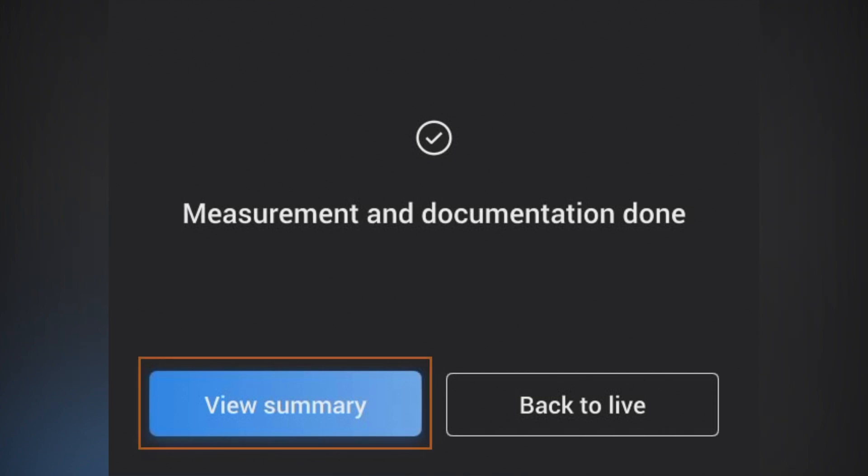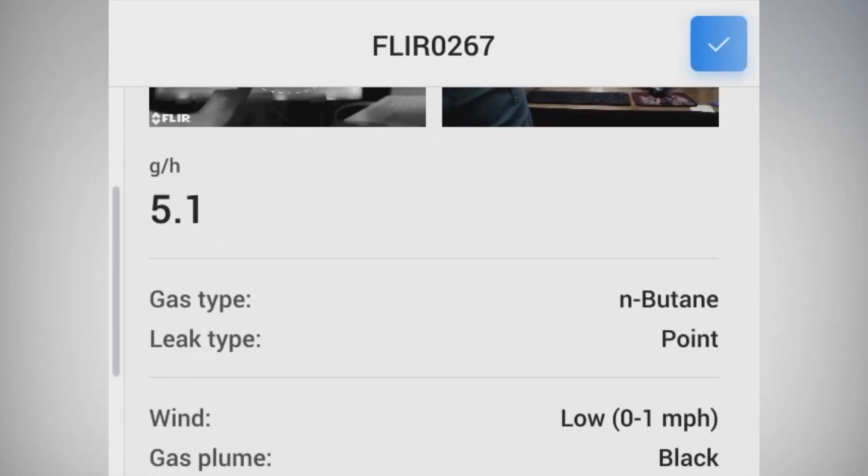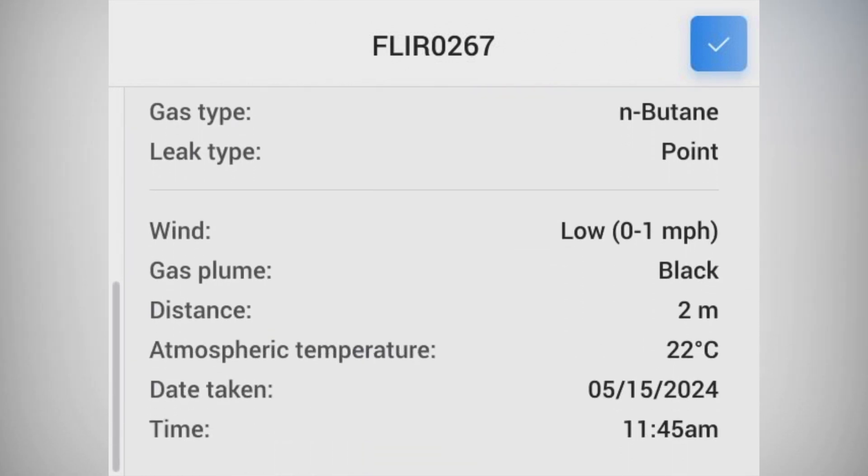At the end, you will be able to view your summary, see your results, and the various parameters that you have. In this case, we had a result of 5.1 grams per hour compared to the US EPA study on a disposable lighter of 4.0 grams per hour. That's pretty close.